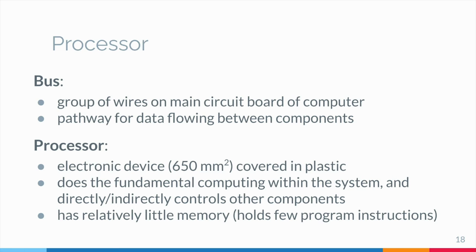Inside the square is an even smaller square of silicon containing billions of tiny electronic parts. A processor may contain 100 billion transistors. It does the fundamental computing within the system and directly or indirectly controls all other components. The processor is sometimes called the central processing unit, or CPU.